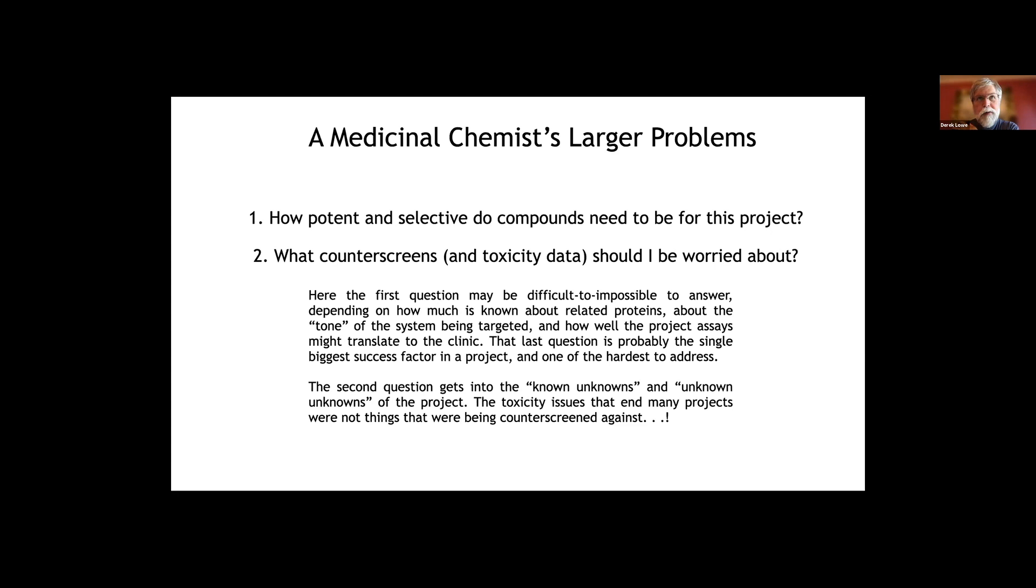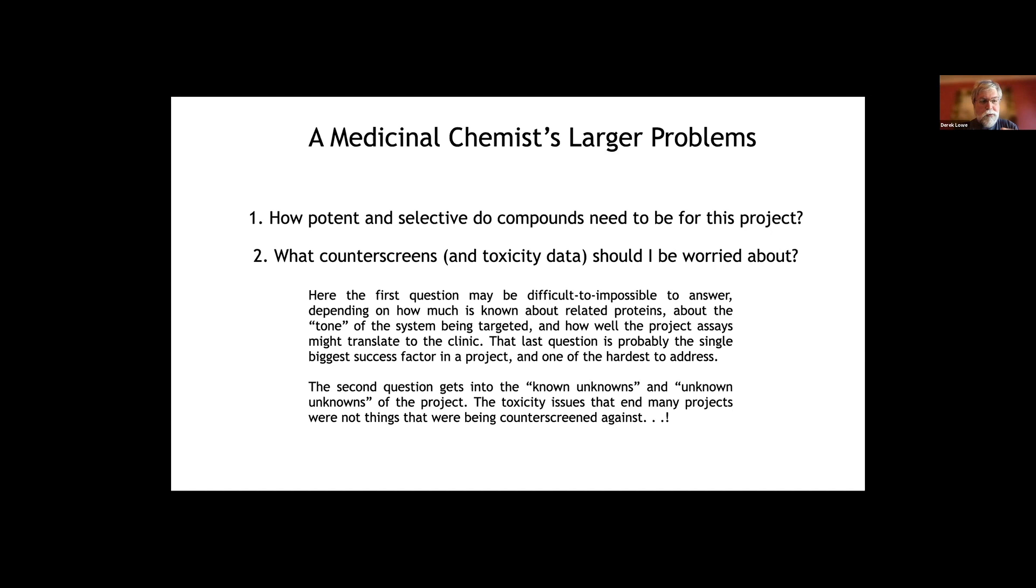None of those were things that you were counter-screening against earlier in the project. You wouldn't have gotten to phase three if you had been counter-screening against these things. No, these are things that come from a totally unexpected direction, something that your compounds are doing that's off-target and bad, or something about your target that is bad that you didn't realize from just your cellular assays or perhaps even the two-week rodent tox.